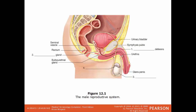In a lateral view of the male reproductive system, you have the penis, the testes, the epididymis on top of the testes, and the vas deferens going all the way around the urinary bladder. The seminal vesicles and prostate gland are also visible, and the urethra is the tube that conveys both urine and semen for the male.